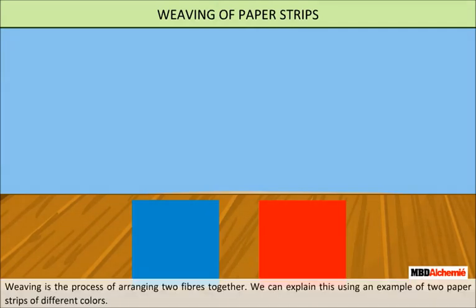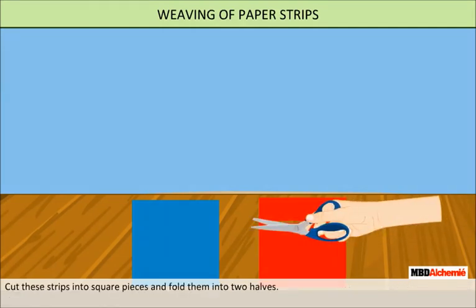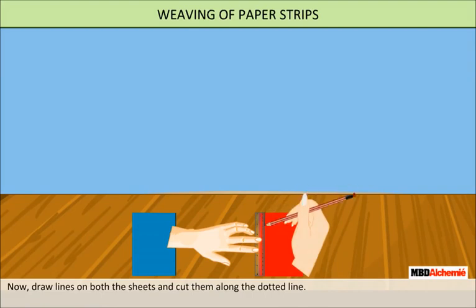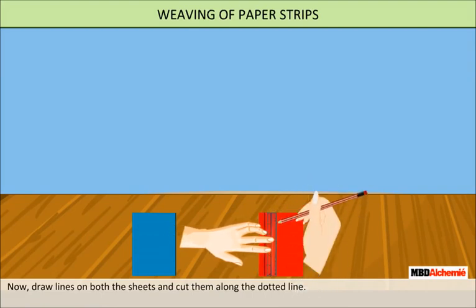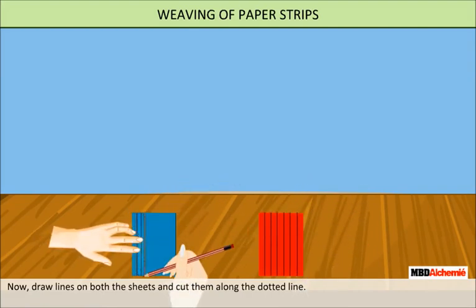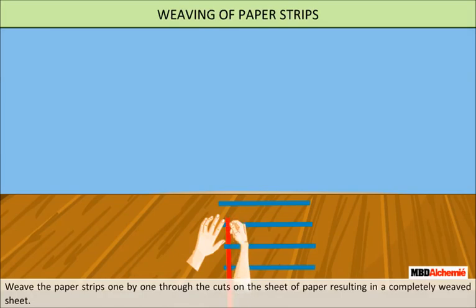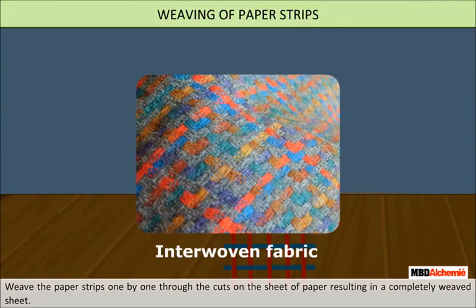Weaving of paper strips: weaving is the process of arranging two fibers together, which can be illustrated with two paper strips of different colors. Cut the strips into square pieces and fold them in half. Draw lines on both sheets and cut along the dotted lines. Then weave the paper strips one by one through the cuts on the sheet, resulting in a completely woven sheet.